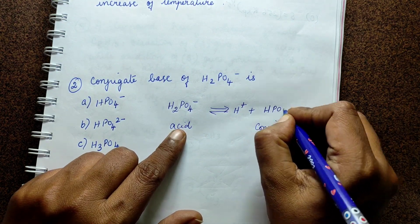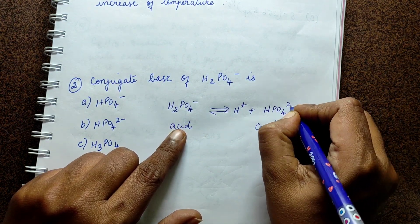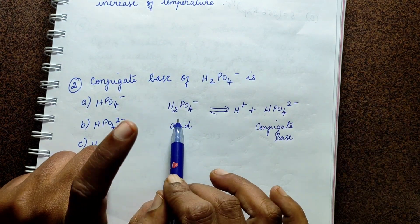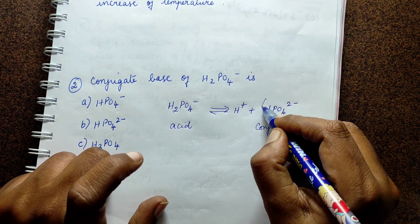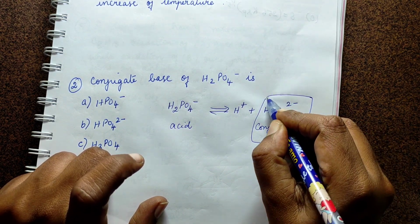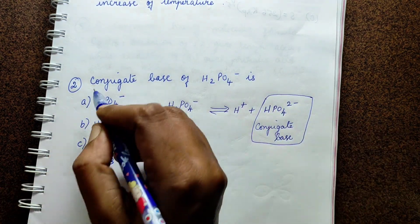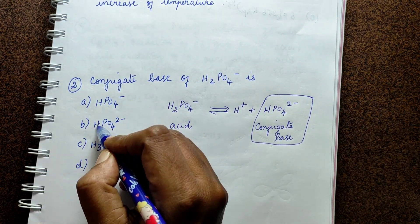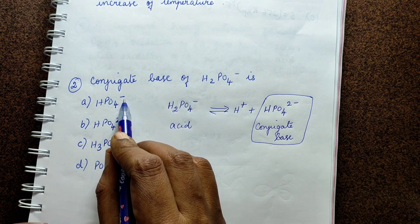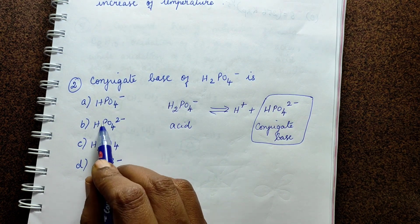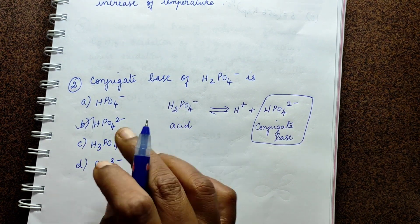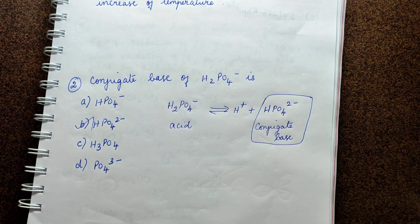Second question: in the acid-conjugate base pair, HPO4 2− is given. So the answer is HPO4²⁻ — HPO4 2 minus is the answer.